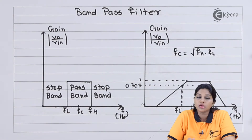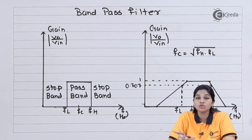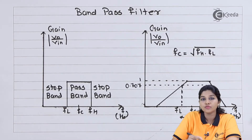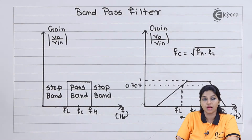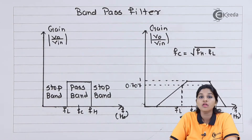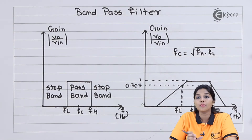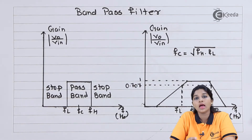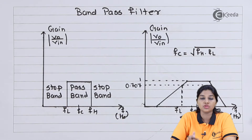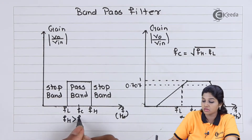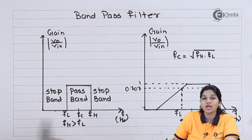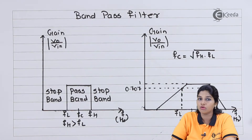The next type of filter is the band pass filter. As its name indicates, it passes only a particular band of frequency. In this case, we have three different bands — that means two stop bands and one pass band. In case of a band pass filter, the pass band extends from fl to fh, where fl is the low cutoff frequency and fh is the higher cutoff frequency, and the value of fh is always greater than fl.